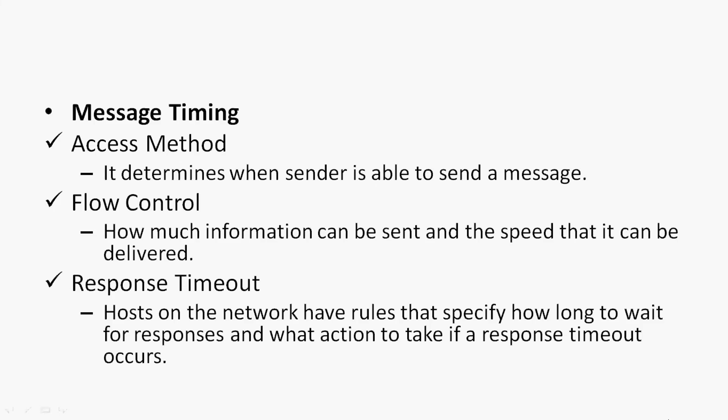Next is message timing. For this we have three rules. The first one is access method, which determines when a sender is able to send a message. The second one is flow control, which governs how much information can be sent and the speed at which it can be delivered. The third one is response timeout — hosts on the network have rules that specify how long to wait for responses and what action to take if a response timeout occurs.